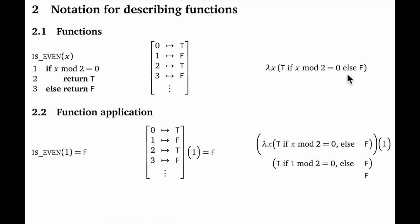One thing you have to get used to is that 'return' isn't typically used in these functions — the return value is whatever happens when we run the code after doing our variable substitutions. So this function will return t for true if x mod 2 is zero, that is if x is even; otherwise it will return f for false.